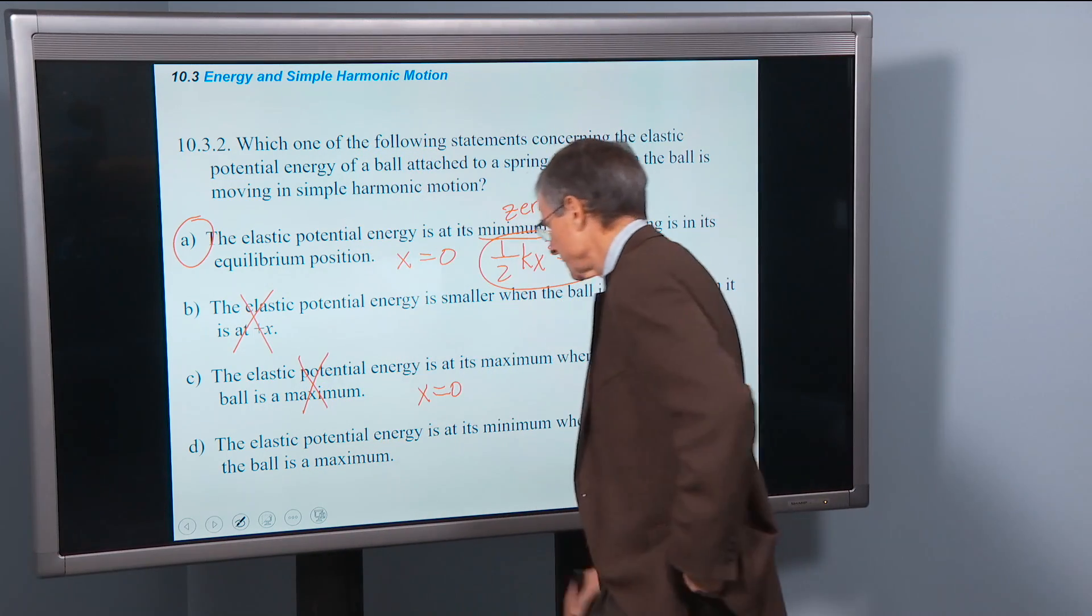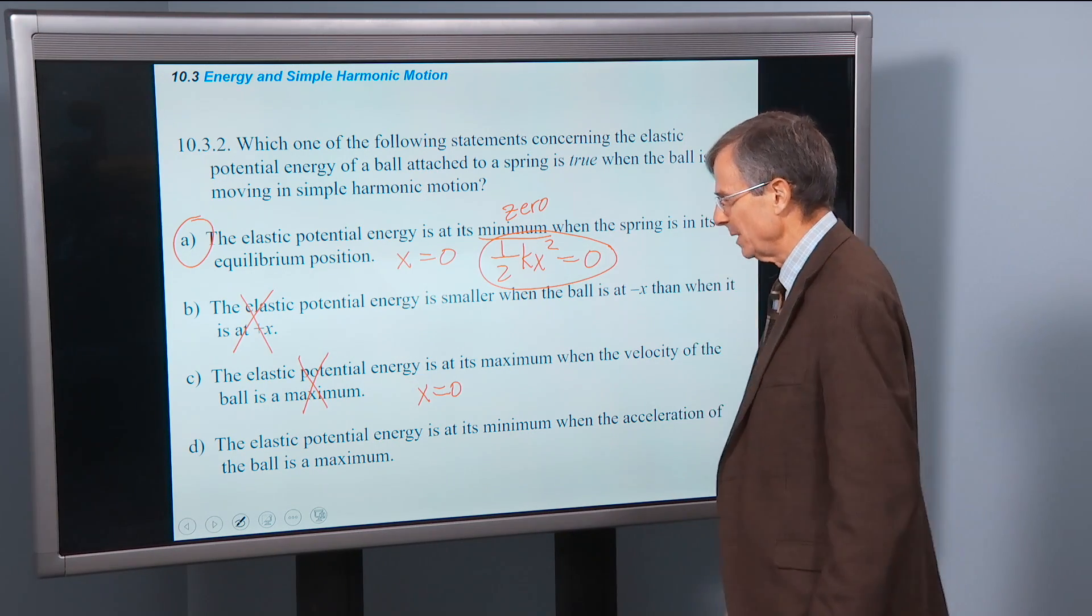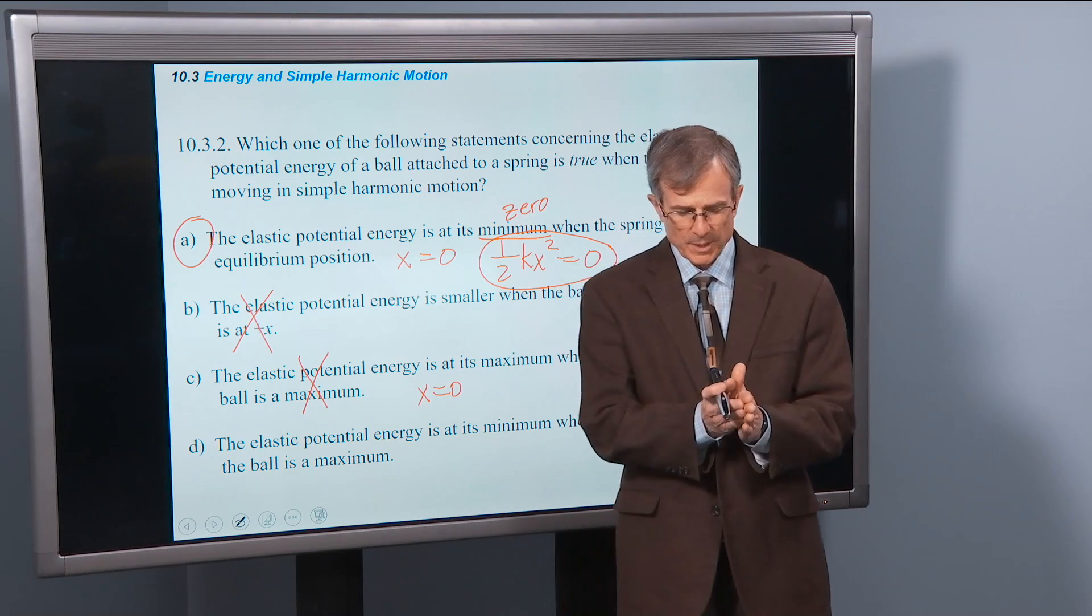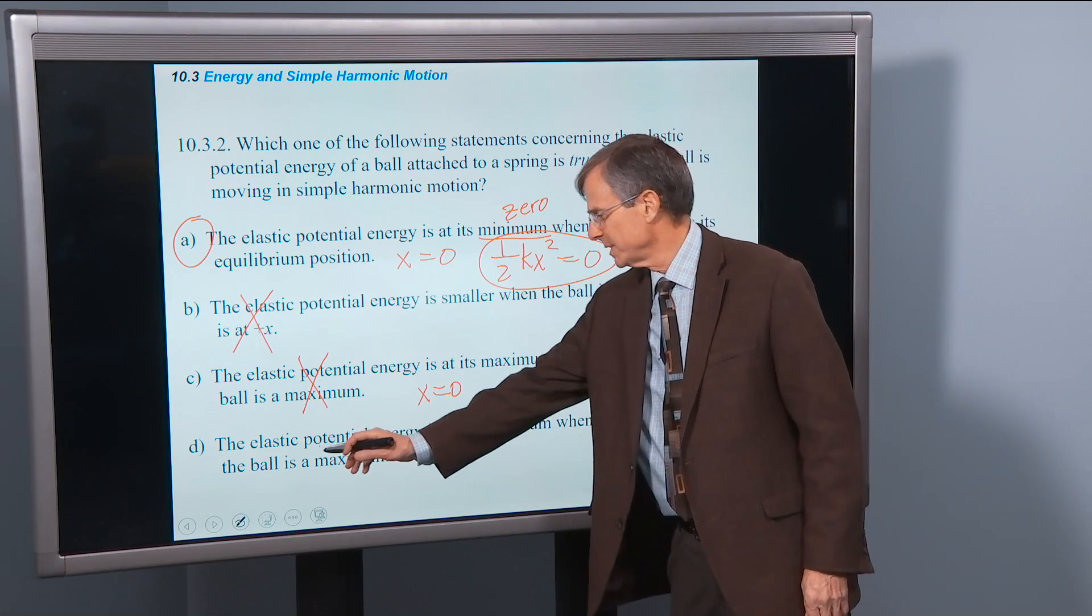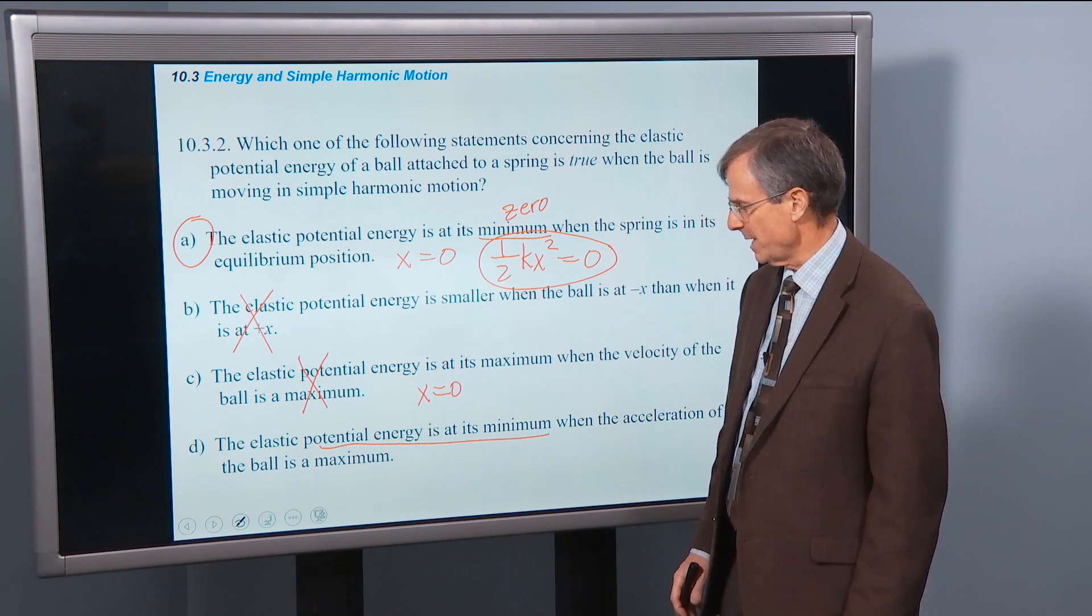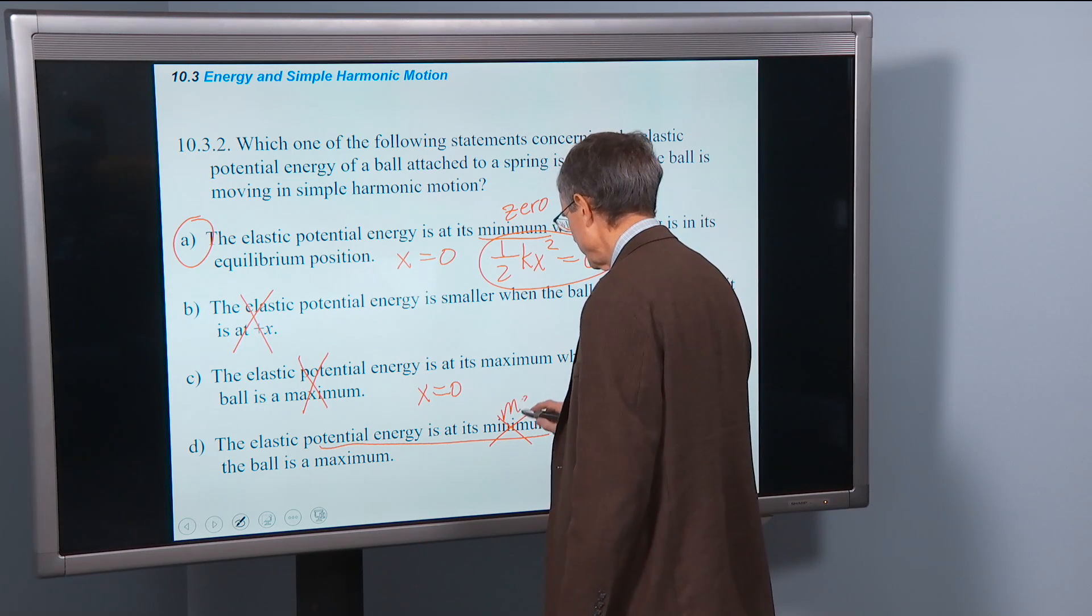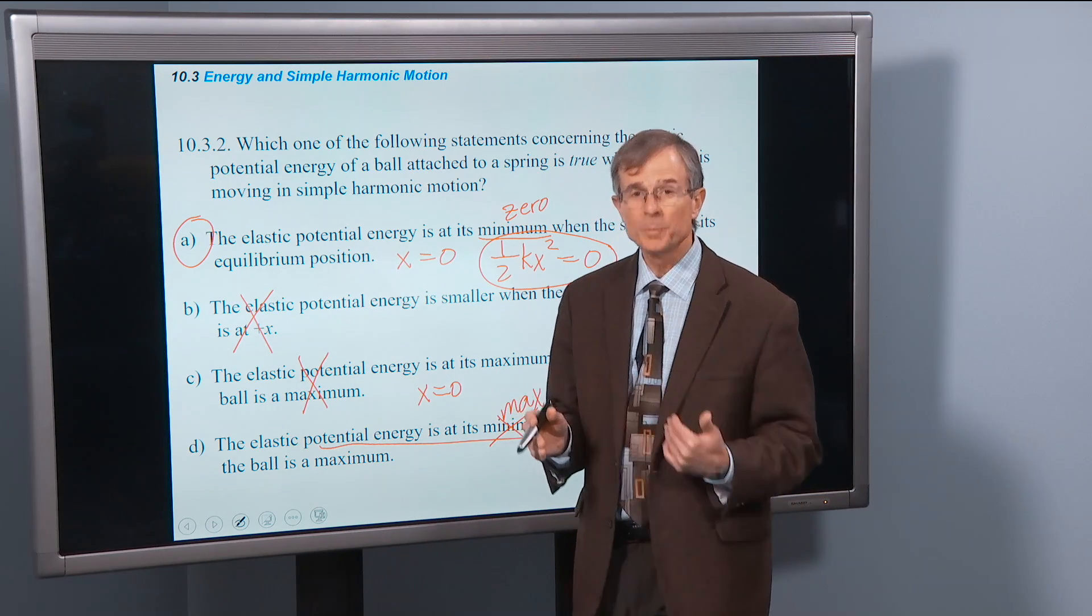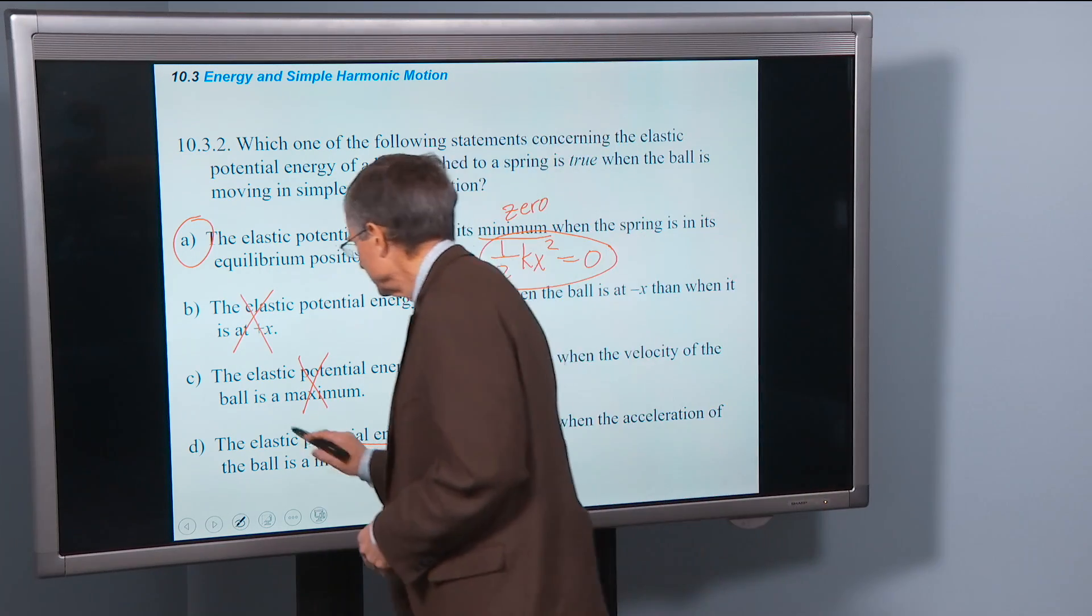And the elastic potential energy at that spot is zero because it's one half k x squared. So that can't possibly be true either. The elastic potential energy is at its minimum when the acceleration of the ball is at a maximum. Where is the ball accelerating? It's moving back and forth between these two positions. It gets to here and it's accelerating a lot. Over here it's accelerating a lot. But here we're saying that the potential energy is at a minimum when the acceleration is a maximum. But that's not true. The potential energy would actually be at its maximum then. Because the acceleration of the ball is greatest when the displacement of the ball is the greatest.